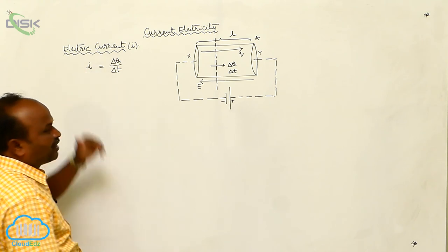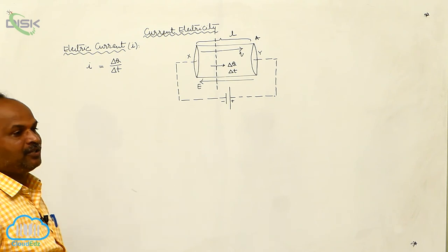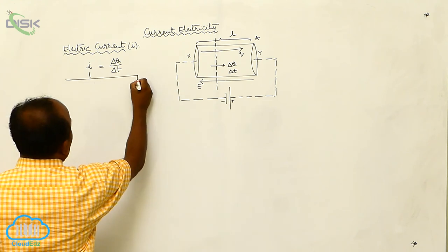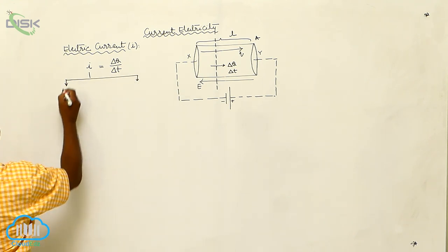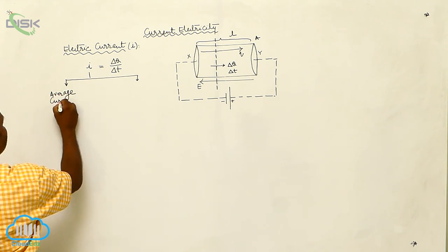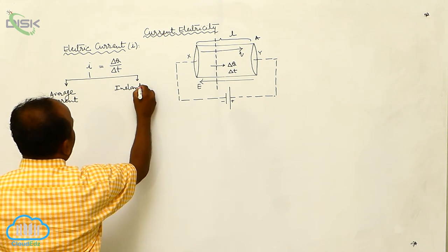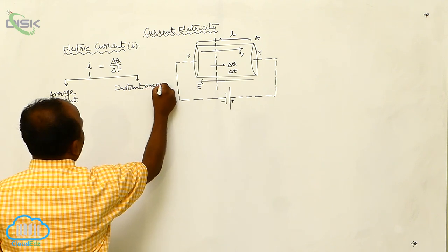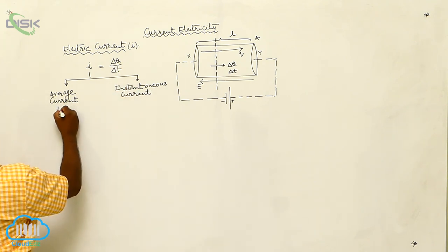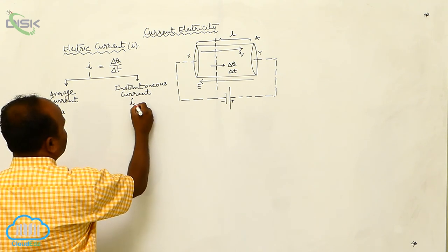The ratio of charge to the time elapsed is called the current. The current is of two types: average current and instantaneous current. Average current is defined as I_a, and instantaneous current is defined as I_i.